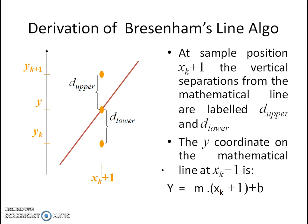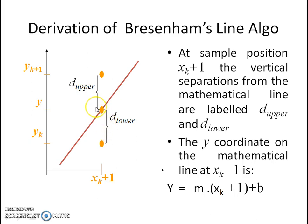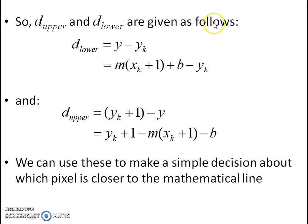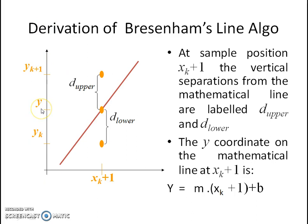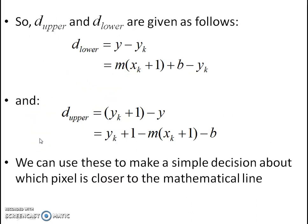Derivation of the Bresenham Line Algorithm. In this diagram there are two axes, x-axis and y-axis. At sample position xk+1, the vertical separations from the mathematical line are labeled as d_upper and d_lower. The y coordinate on the mathematical line at xk+1 would be y = m(xk+1) + b. We calculate the difference between d_upper and d_lower. d_lower is y minus yk, and d_upper is yk+1 minus y.